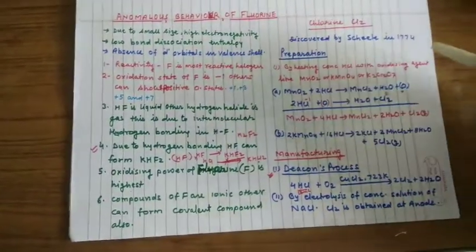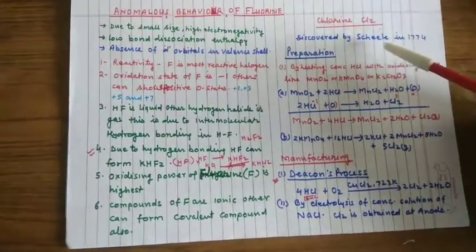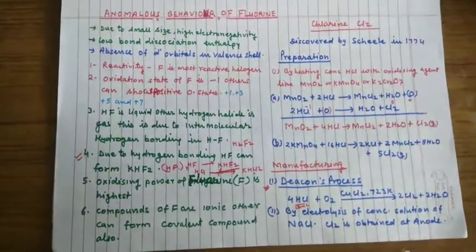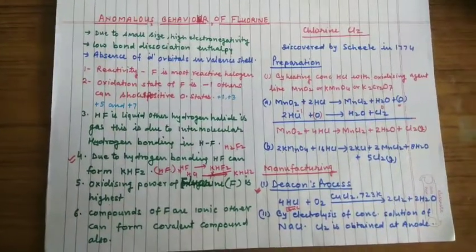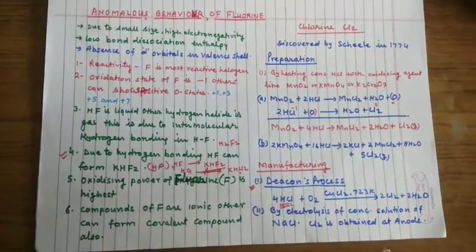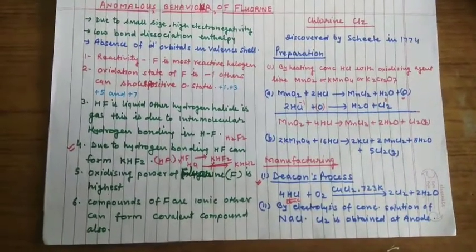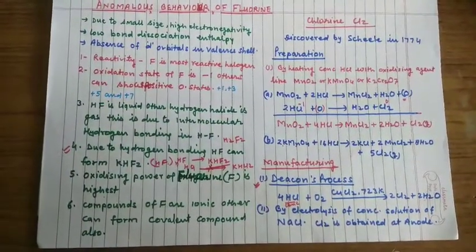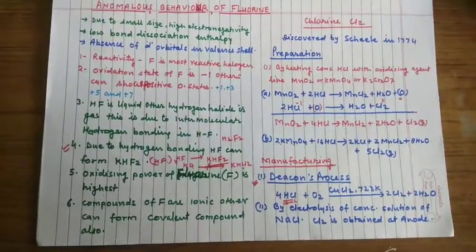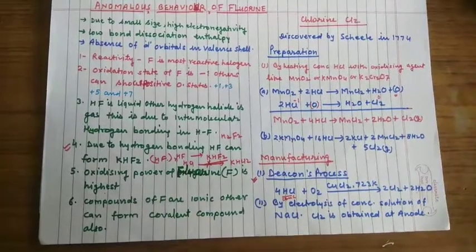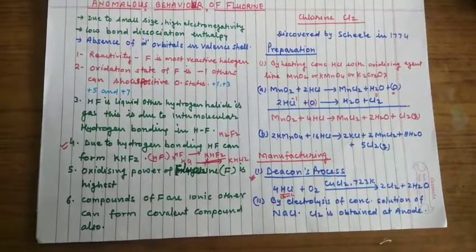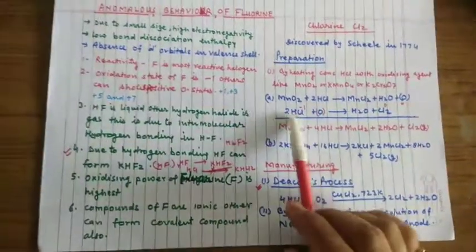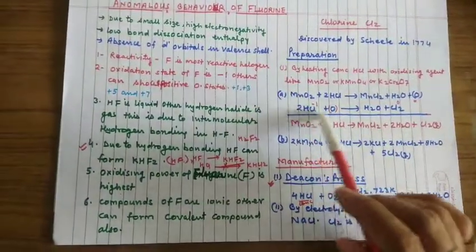Chlorine was discovered by Scheele in 1774. For preparation, chlorine can be prepared by heating concentrated hydrochloric acid with oxidizing agent like MnO2, KMnO4 and K2Cr2O7. If you see the reaction, when MnO2 reacts with concentrated HCl, it forms MnCl2, H2O and nascent oxygen. This nascent oxygen converts HCl into chlorine and water.